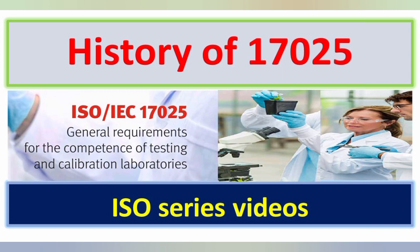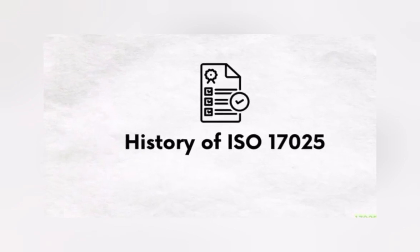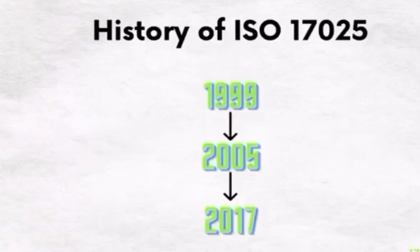Now we will discuss the history of ISO 17025 and see how many versions have been created till now. History of ISO 17025: there are three releases — 1999, 2005, and 2017.